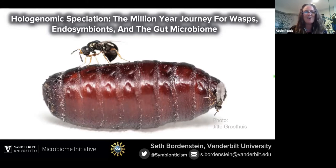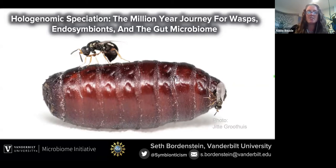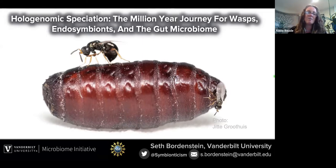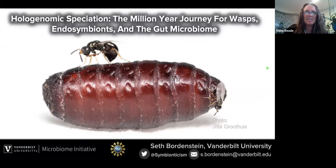I want to point out that there are a lot of undergraduates in the audience today. This all began when Seth was doing undergraduate research on Wolbachia at the University of Rochester — his first publication was on work he started as an undergrad. He's also mentored many successful graduate and undergraduate students; fifteen of those 106 publications were actually authored by undergrads, and the Bordenstein Lab is always seeking new lab members.